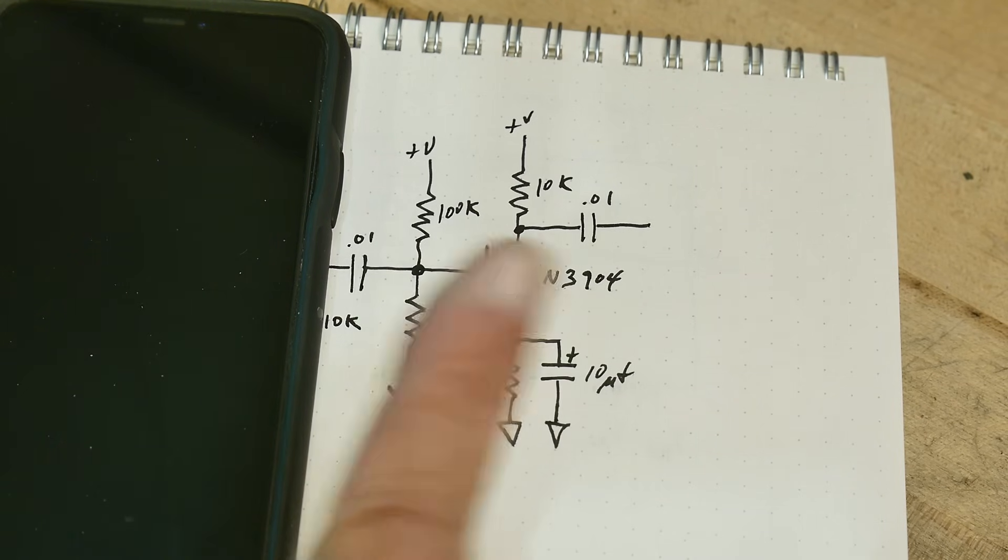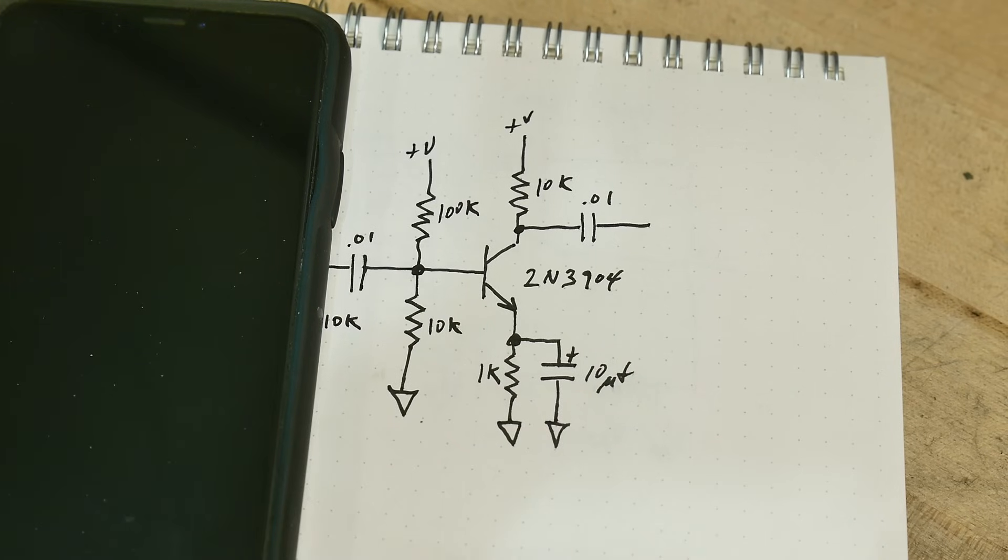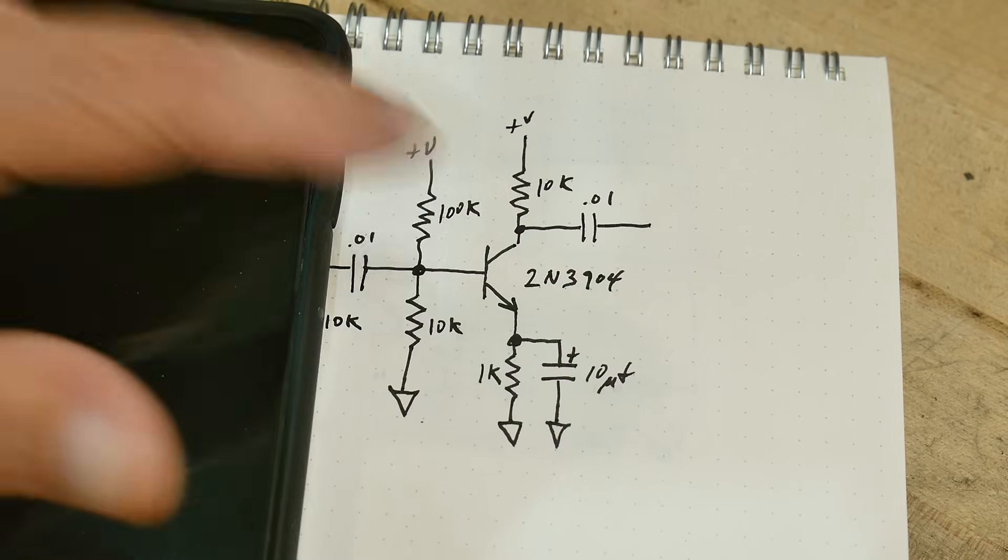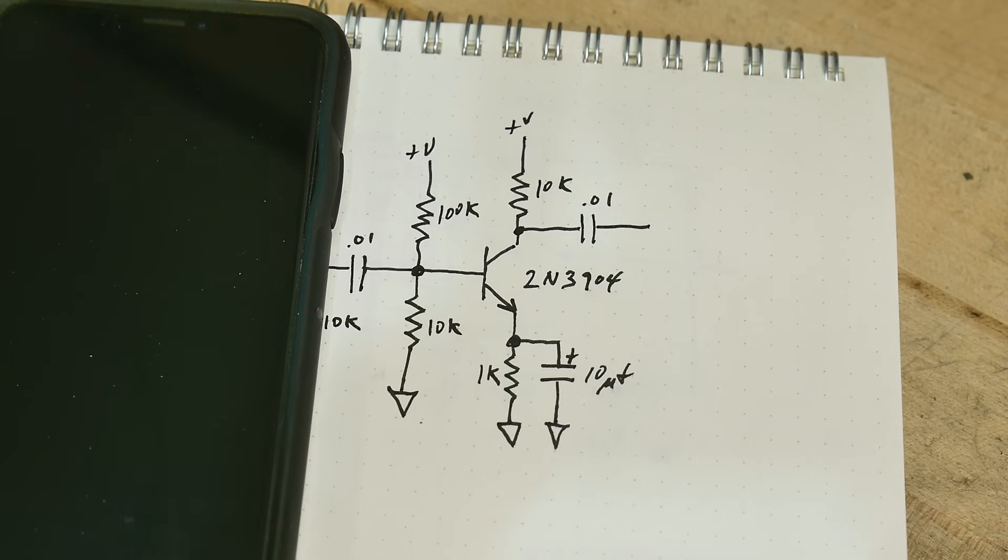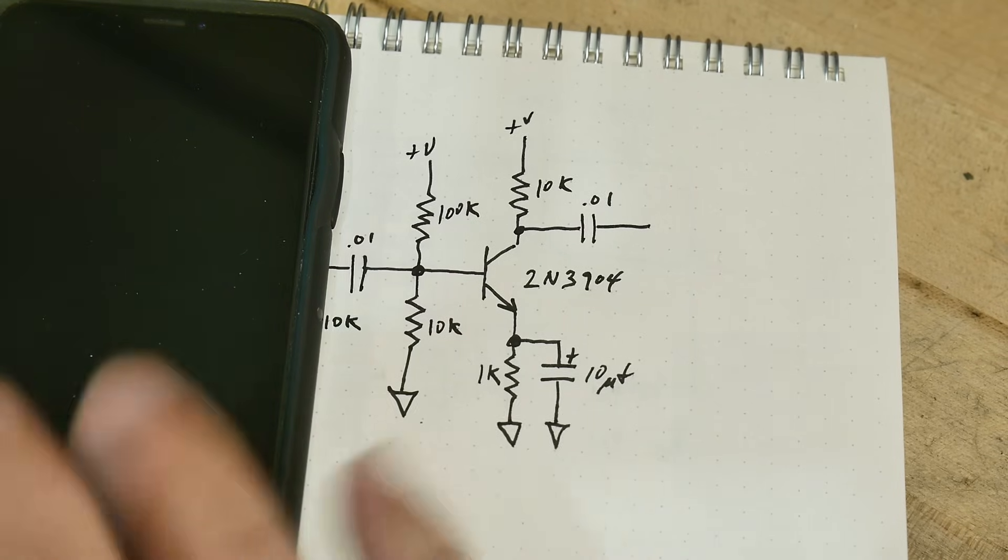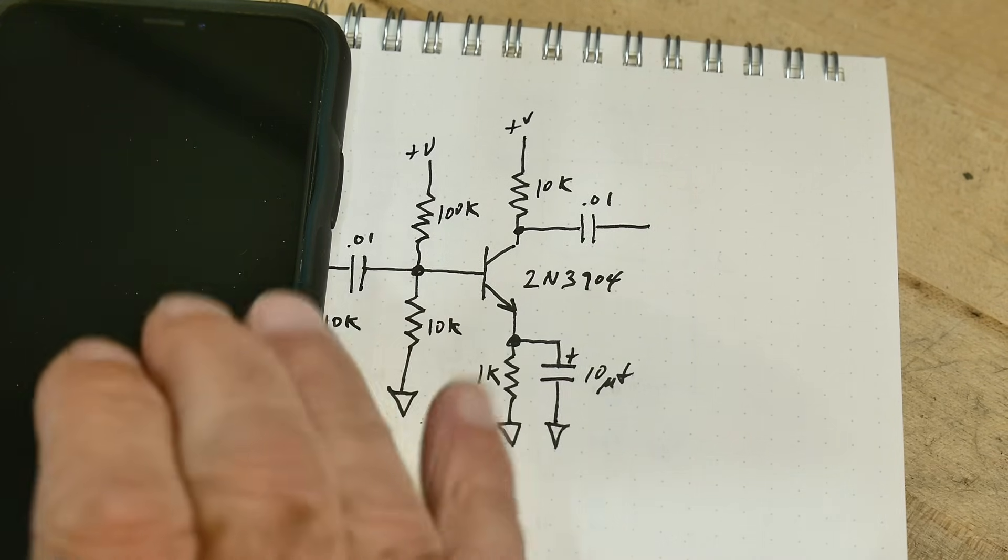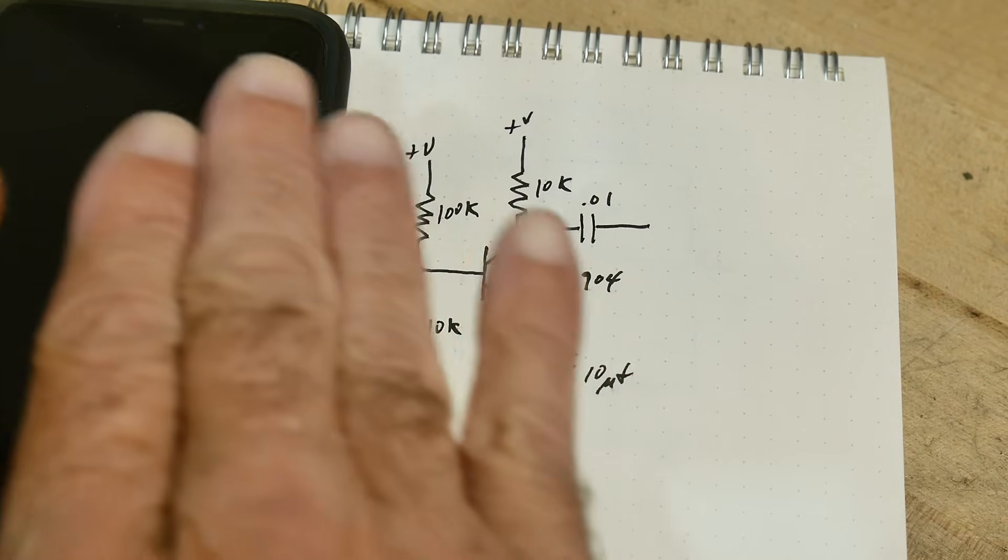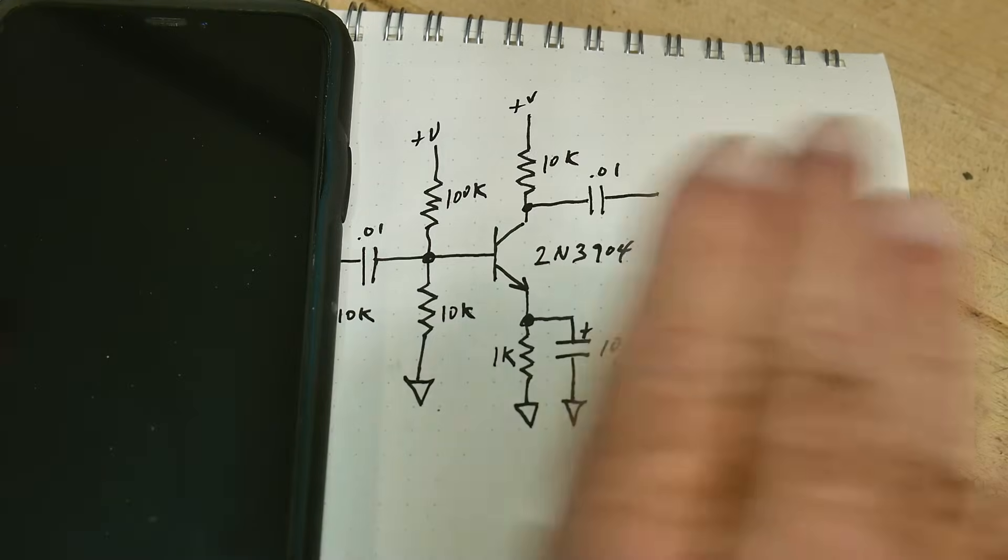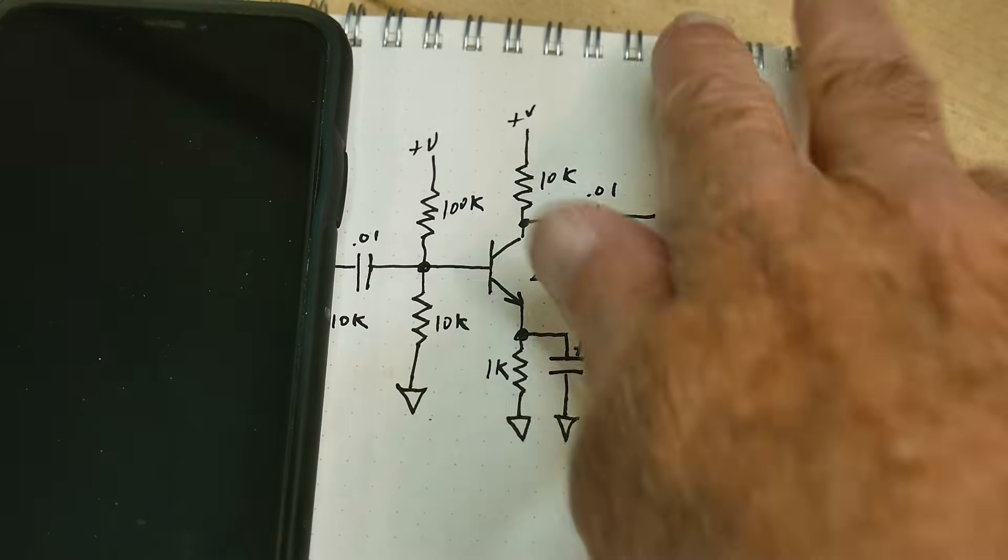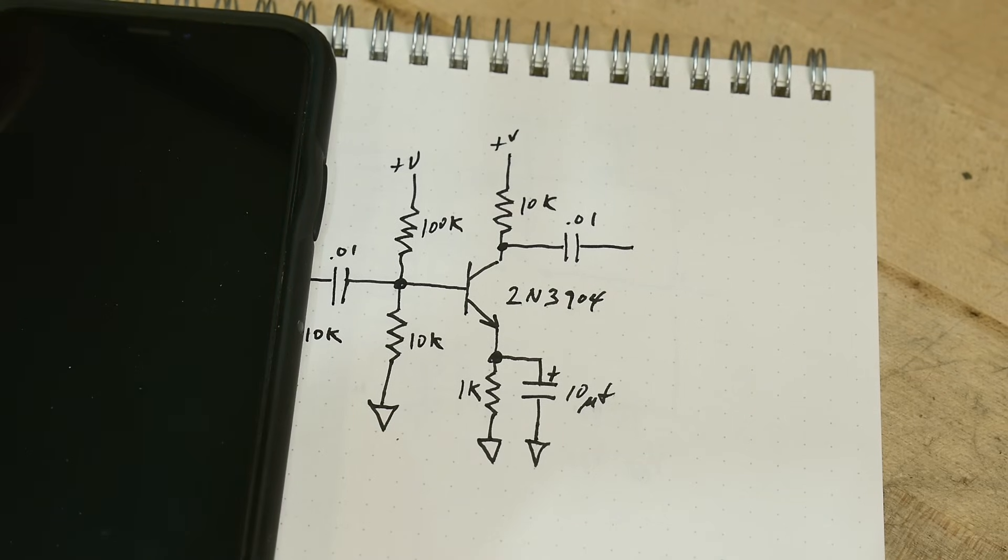So I want a one transistor NPN transistor oscillator. This is the point that's going to be the output. How can we use that as feedback? In order to oscillate, you need to have positive feedback. It's like a swing set. When it comes over here, then you push it. If you push it out of phase, it doesn't work. You need to push it in phase. So you need positive feedback. You need to be in phase with the output. The input needs to be in phase with the output.